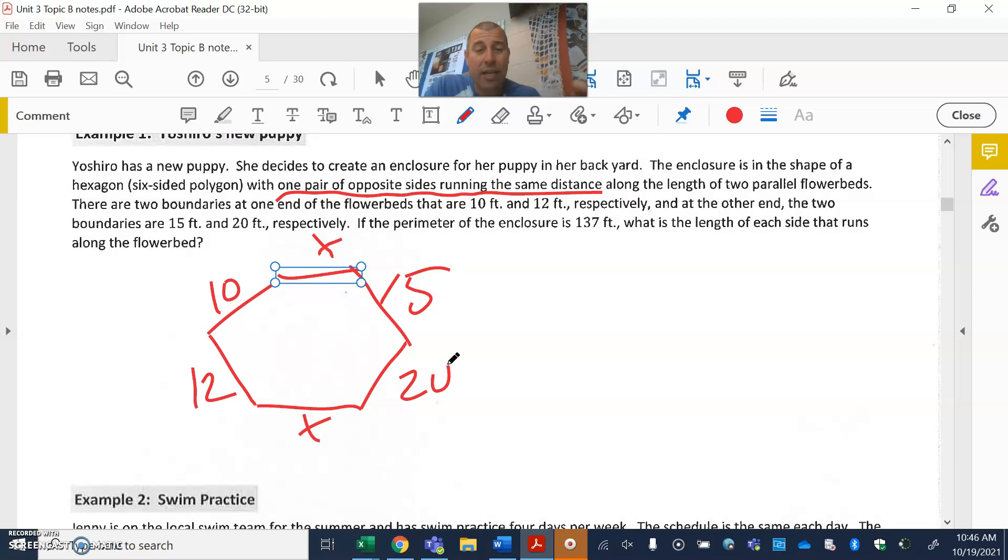Let's get things set up. I know it's six sides, so I've got one side, two sides, three sides. I've got the information here. I know it's 10 plus 12 plus 15 plus 20 and then plus an x and an x, and I know all of that has to add up to 137.